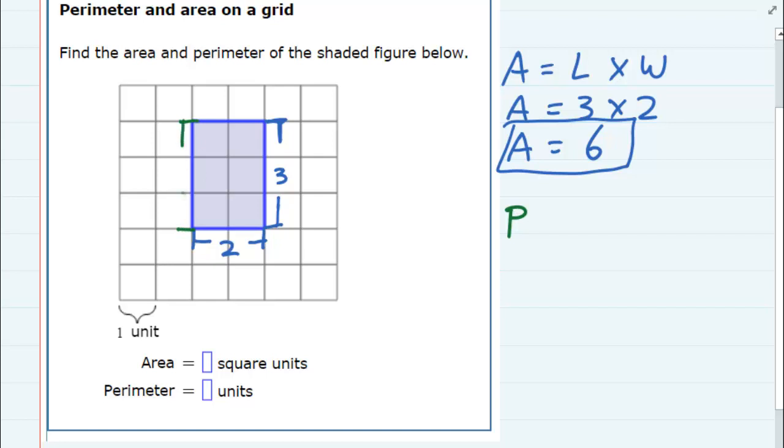From here to here is also going to be three units, and then along the top here, this distance is two units, like at the bottom. So if I'm looking for the perimeter, instead of using a formula, I'm just going to add up all these lengths.